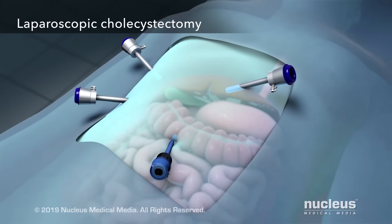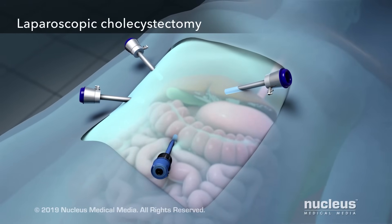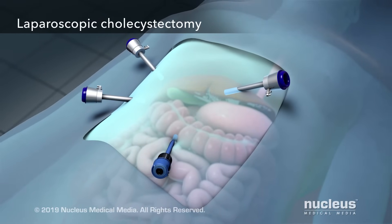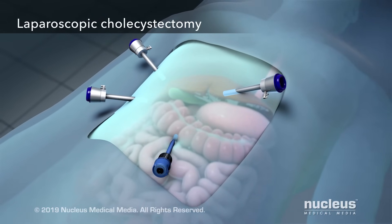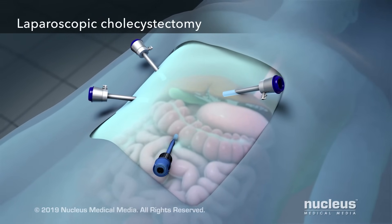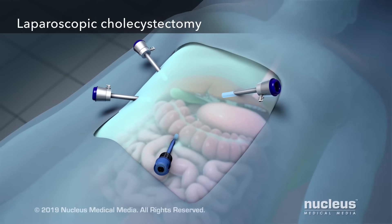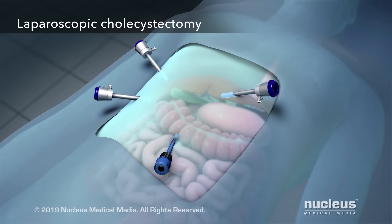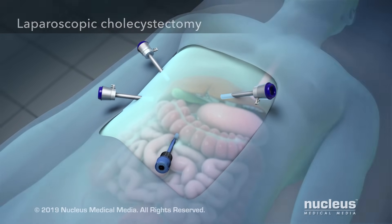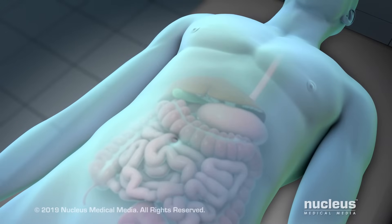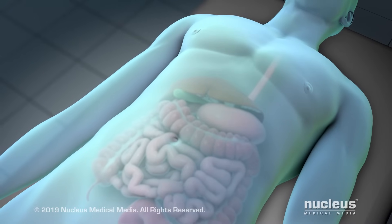A laparoscopic cholecystectomy is the most common way to remove the gallbladder. It uses tools inserted through tiny incisions in your abdomen, but you may need an open cholecystectomy if a laparoscopic cholecystectomy can't be done safely.